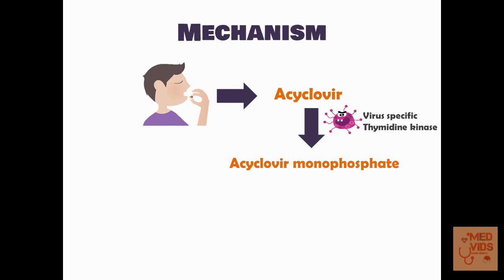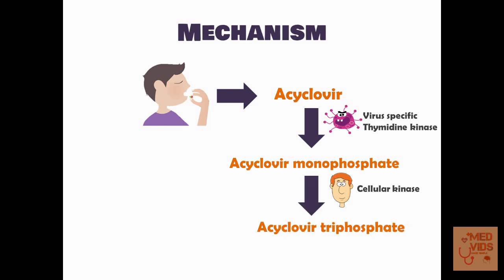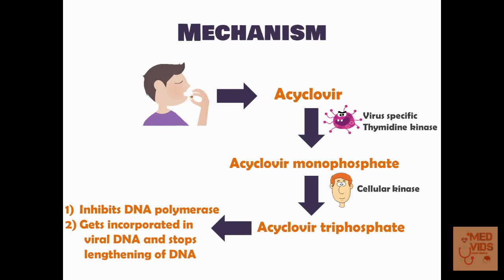Once acyclovir monophosphate is formed, enzymes present in our cells known as cellular kinases will further phosphorylate it to acyclovir triphosphate, which is the active form of acyclovir. Acyclovir triphosphate inhibits DNA polymerase in herpes simplex viruses, affecting DNA synthesis. It also gets incorporated into the viral DNA, preventing the lengthening of the herpes viral DNA.